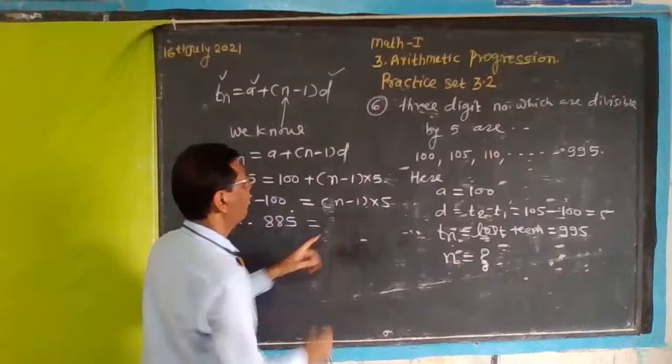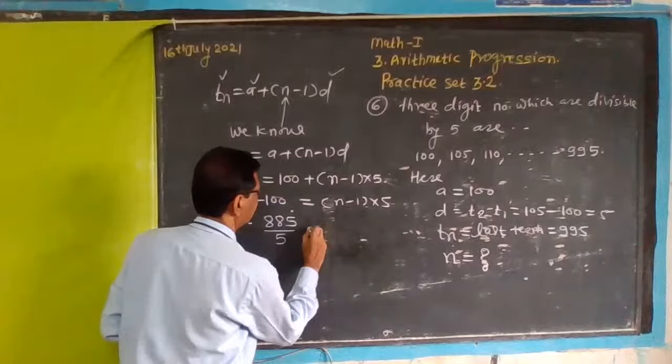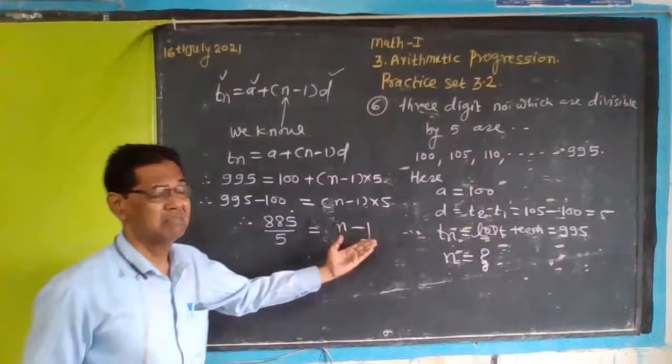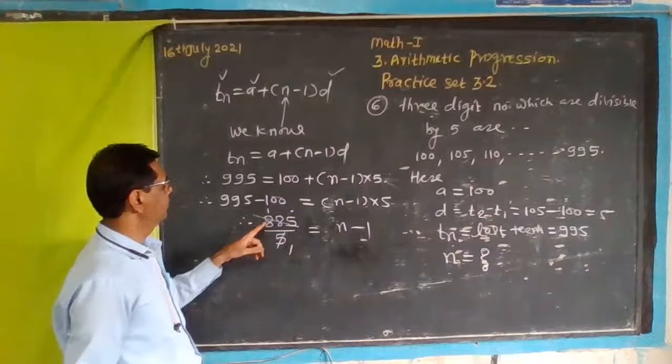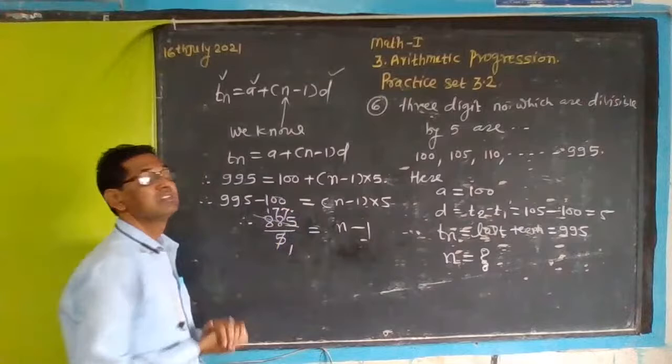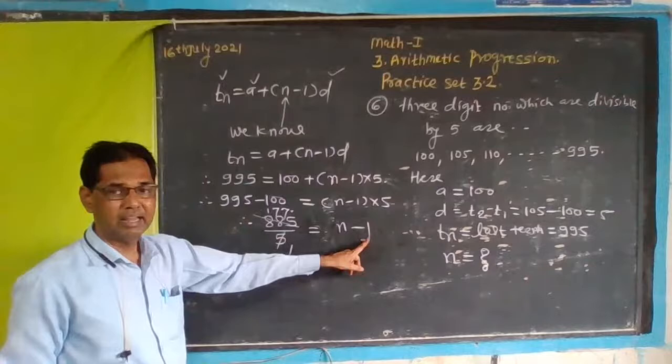Now we divide both sides by 5. So we get n minus 1 equals 895 divided by 5. 5 into 177 is 885, so we get 177. Therefore n minus 1 equals 177.